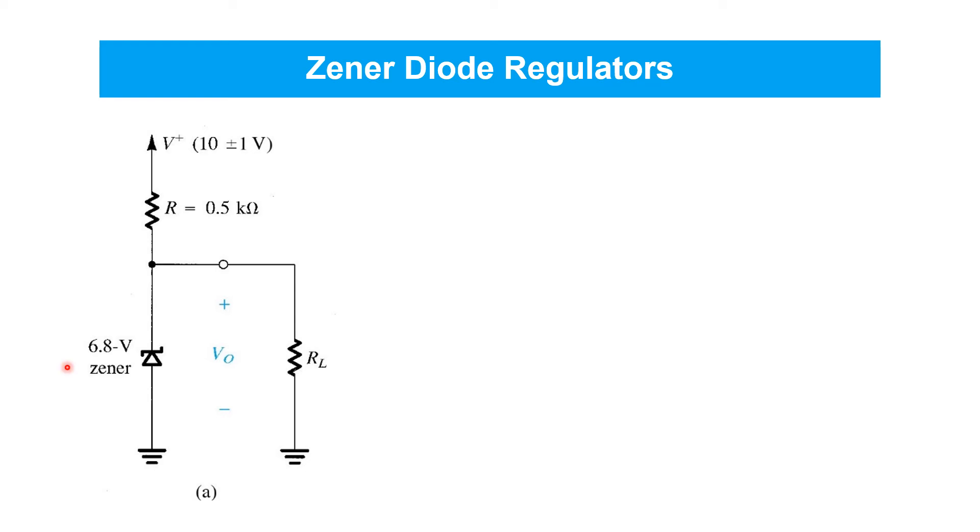So in this case, we've got a 6.8 volt zener diode with a reverse bias voltage applied by this 10 volt nominal supply voltage here. And the resistor here provides the voltage drop from the 10 volt supply to the 6.8 volt zener, resulting in DC current flowing this way. And that current will split, some of it will flow through the zener in the reverse direction, and some of it will flow through the load. Remember that a zener is intended to operate under reverse bias in zener breakdown.